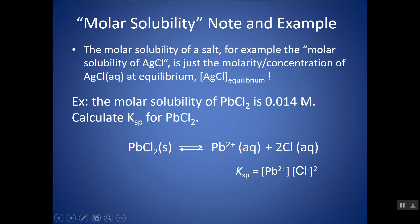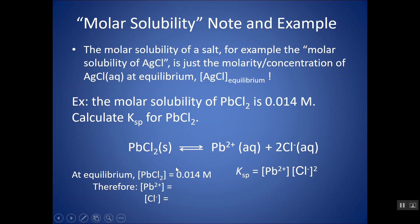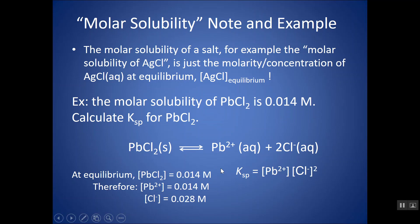In the problem it tells me the molar solubility is 0.014, which is just the concentration of the ionic compound in aqueous state at equilibrium. That's not written in the KSP expression — it's not there — but the ions are. For every 1 PbCl₂, I get 1 Pb²⁺ ion, so the Pb²⁺ concentration at equilibrium is also 0.014 M. For every 1 PbCl₂, I get double the chloride ions, so I multiply by the subscript and get 0.028 M of Cl⁻ at equilibrium.